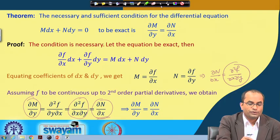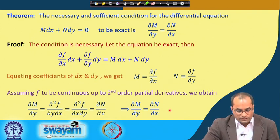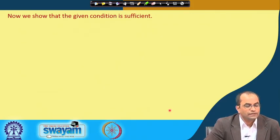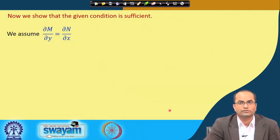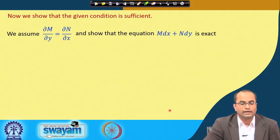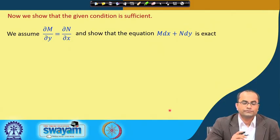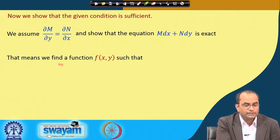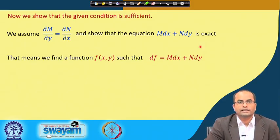Now we prove the other direction — sufficiency. We assume the condition ∂M/∂y = ∂N/∂x holds, and then show that M dx + N dy is exact. To show this, we must find a function f whose differential is exactly M dx + N dy.